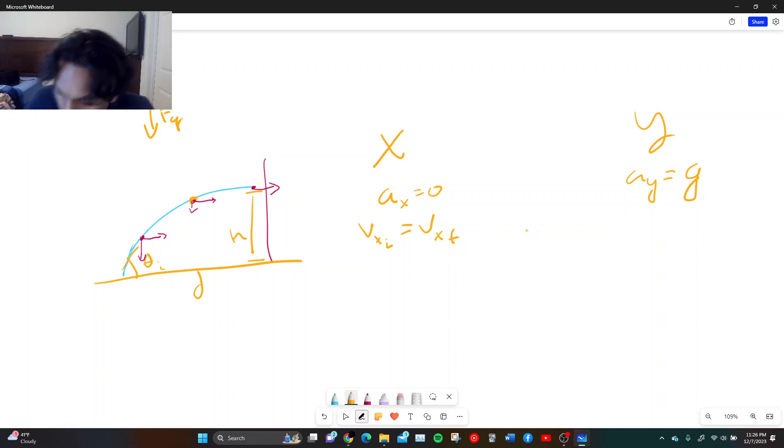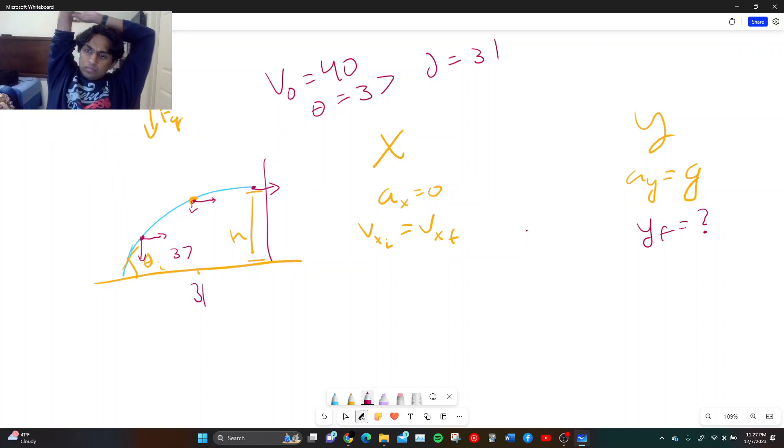Obviously, it's moving in the X direction, which means there is velocity, but the velocity does not change because there is no acceleration, which means that this arrow length right here in the X direction is the same as the arrow length right here and is the same as the arrow length right here. What changes is the Y direction. The start's really big, gets smaller, and then eventually goes to zero. So what that means is that velocity X initial is equal to velocity X final at any point.